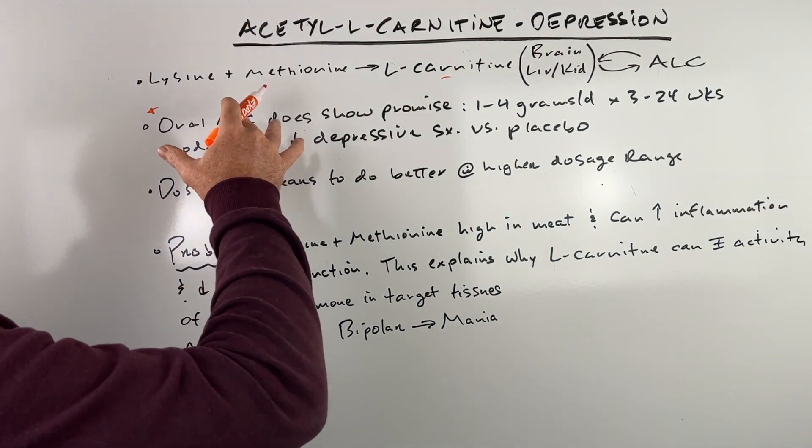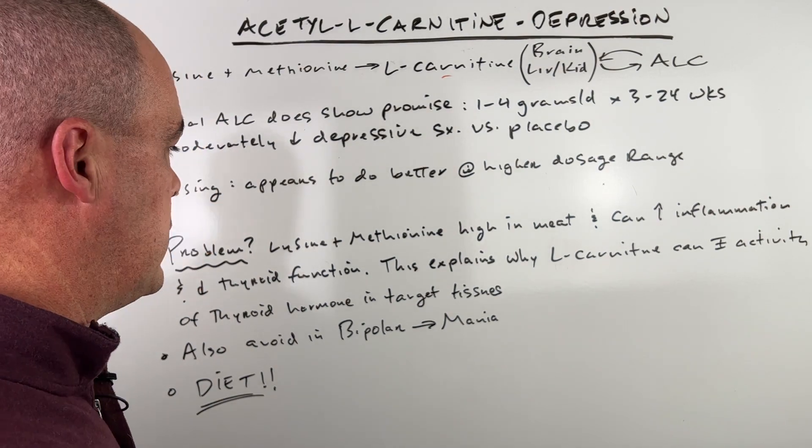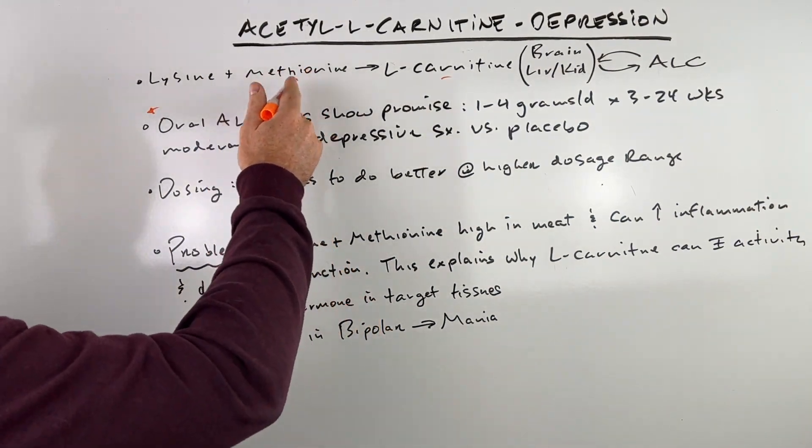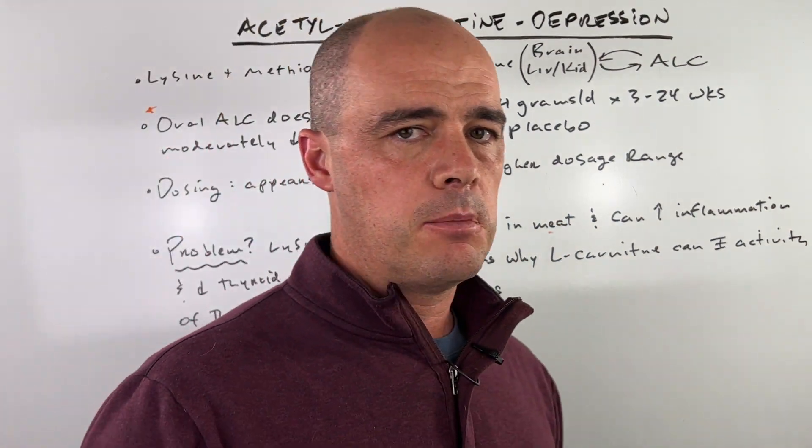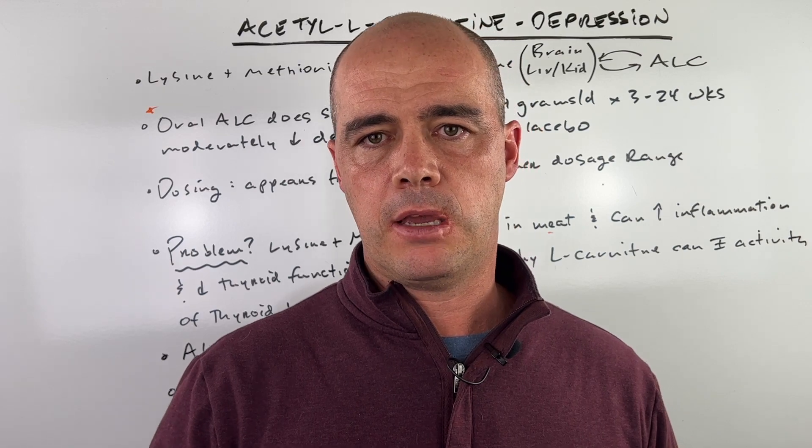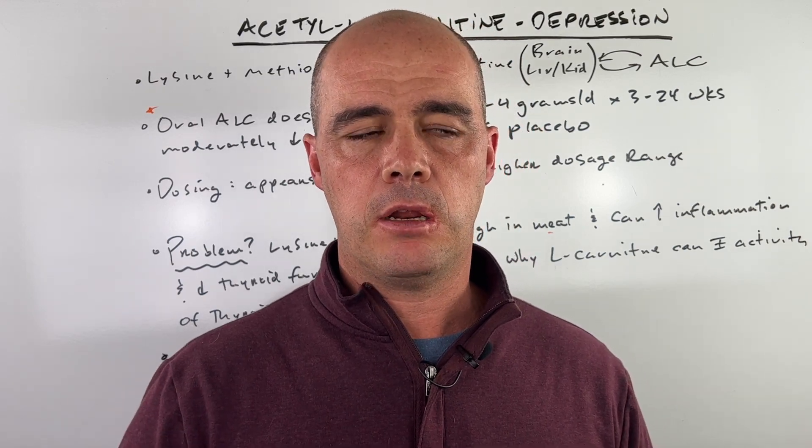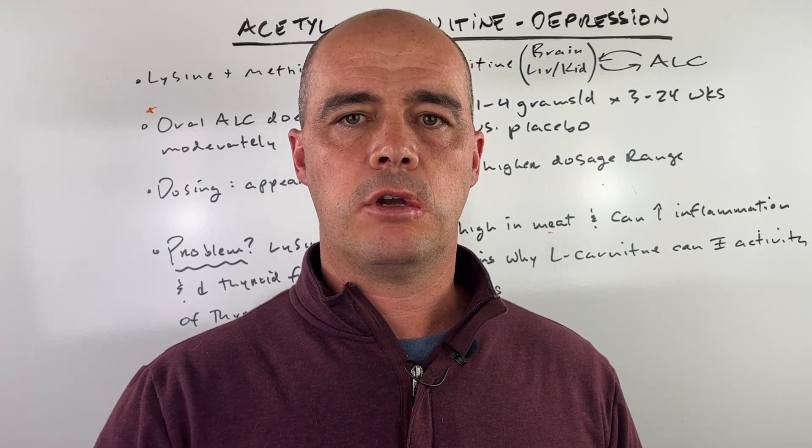We already talked about your body essentially makes ALC from the foods you eat. Well, lysine and methionine, the building blocks of L-carnitine, are high in meat. Now let me be very clear here. I'm very pro red meat. I eat red meat. I eat a lot of red meat.